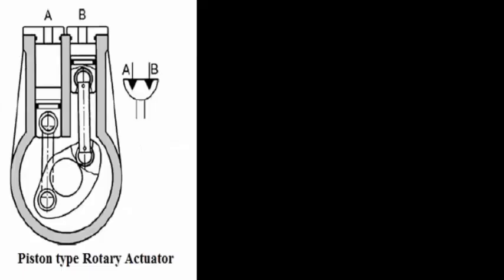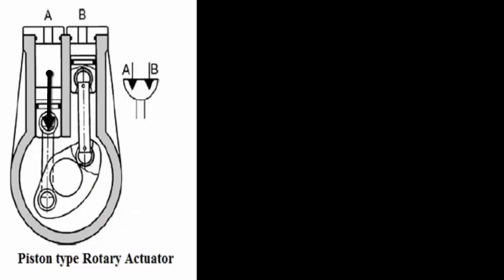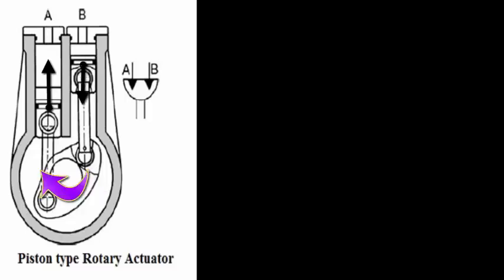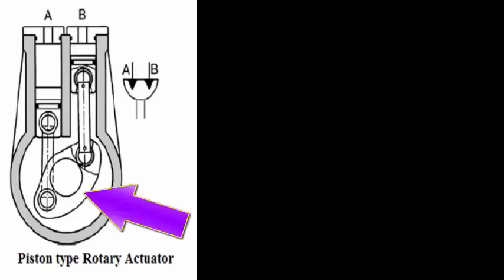That is about the vane motor configuration. Then you have the piston type rotary actuator. Here you have two pistons whose connecting rods are connected to a lever arm below. When you apply high pressure on piston A, the piston moves down and simultaneously piston B moves upwards, giving rotation at the center of the lever arm or crank. When you apply high pressure at B, piston B moves down and piston A moves upwards. By alternating the high pressure fluid supply to port A or port B, the corresponding pistons move upward or downward, achieving a twisting motion at the center of the crank. This is a simple method of achieving limited rotation using a piston and cylinder arrangement.